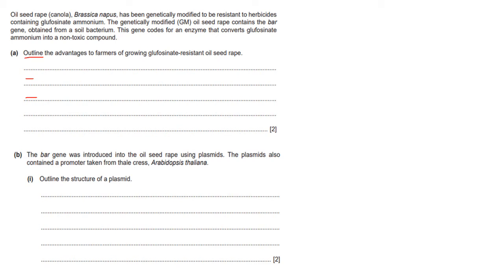The bar gene was introduced into oilseed rape using plasmids, which also contain a promoter. The question asks: outline the structure of a plasmid. Many students start talking about features, but structure means what you can see when you look at it. A plasmid is circular and small. Please avoid saying it is a loop — a loop is not necessarily circular — say it is circular and small, and that gives you full marks.